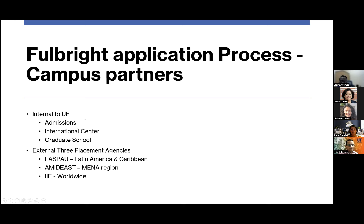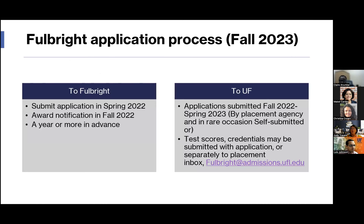The internal people working on Fulbright applications are our admissions office, the International Center, and the Graduate School. Students typically apply in spring with award notification in the fall — about a year in advance of when they arrive. Applications submitted for fall 2022 and spring 2023 are still trickling in. They should have test scores and credentials meeting UF requirements, as well as language test results, all in the application dossier.